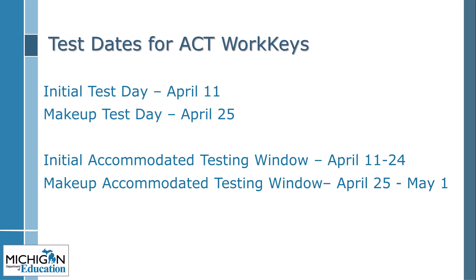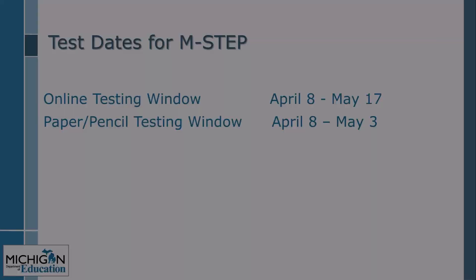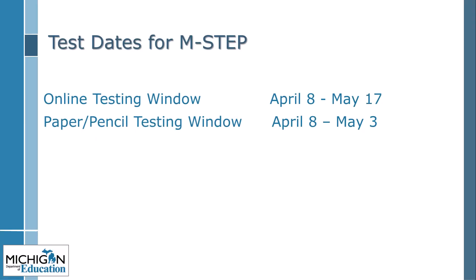M-STEP Online for Science and Social Studies has a six-week window starting April 8 through May 17, 2024. For those schools pre-approved for a paper/pencil assessment for M-STEP, the window is four weeks, from April 8 through May 3, 2024. Except for schools who have applied for and received an online waiver, paper/pencil testing is allowed only for those students for whom online testing is not appropriate.